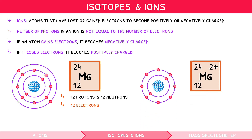Magnesium-2+ is still magnesium, so it will still have 12 protons and 12 neutrons. However, it has a 2+ charge, and so must have lost 2 electrons. Thus, the magnesium ion will only have 10 electrons.